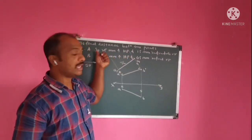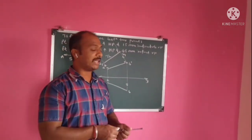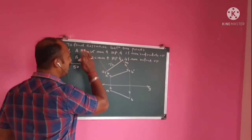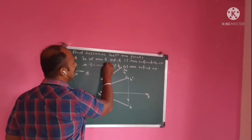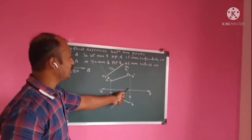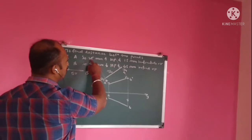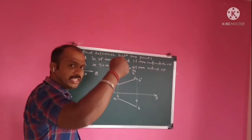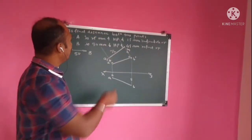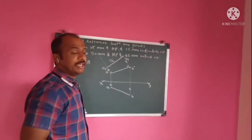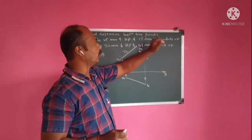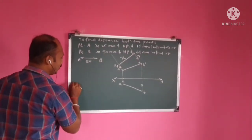Now there is one more case. The same problem, but with one difference: rather than both points A and B being above HP, now point A is above HP and point B is below HP. So point A is in the first quadrant — above HP and in front of VP — and point B is in the fourth quadrant — below HP and in front of VP.